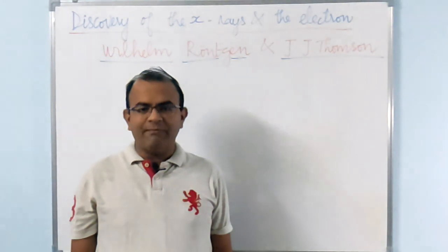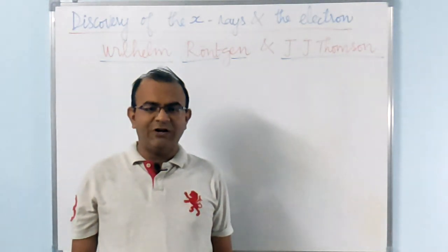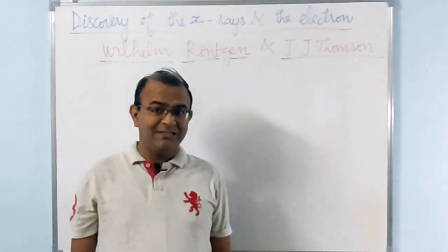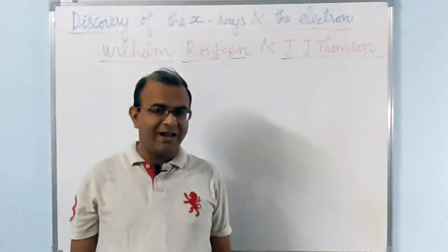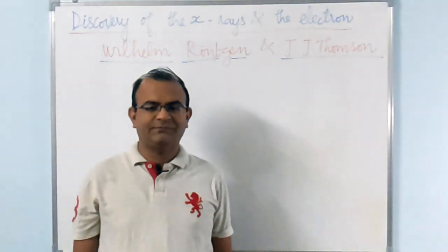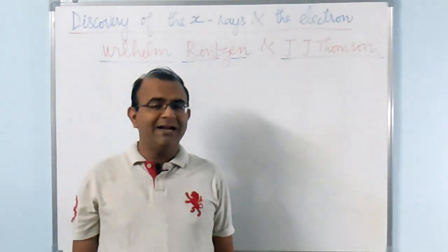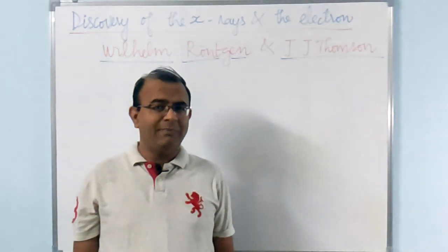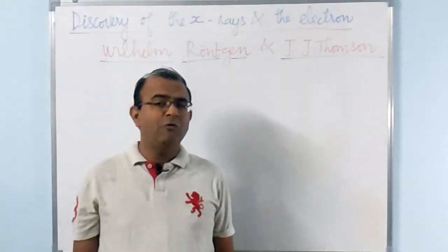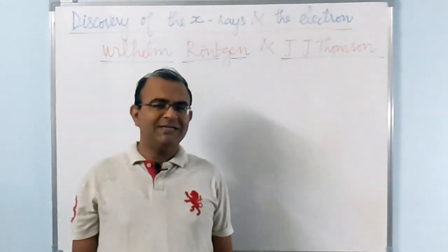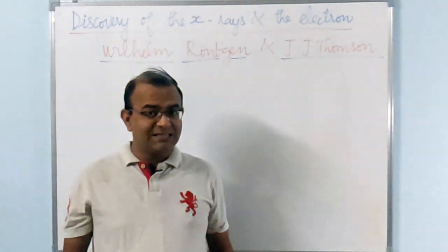Around that time, among the few important discoveries were the discovery of X-rays by Röntgen and the discovery of the electron by J.J. Thomson. Robert Millikan later measured the charge-to-mass ratio of the electron more accurately. Let us proceed to discuss these two discoveries in some detail.